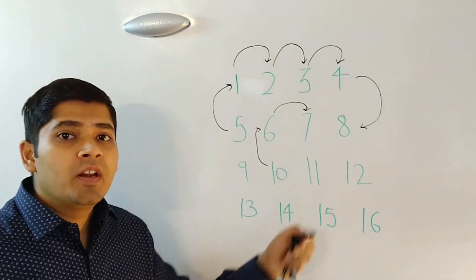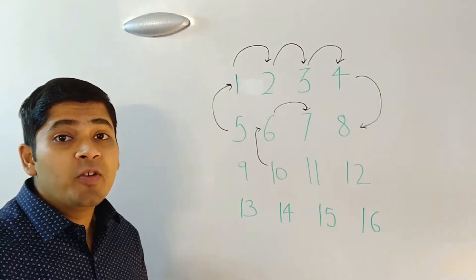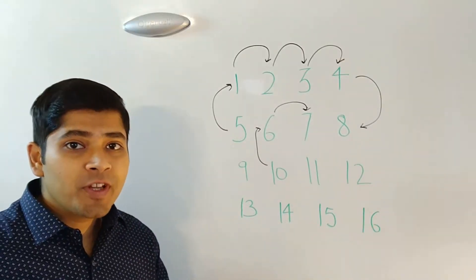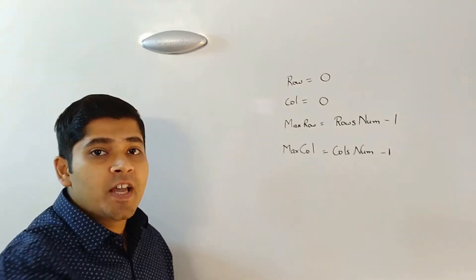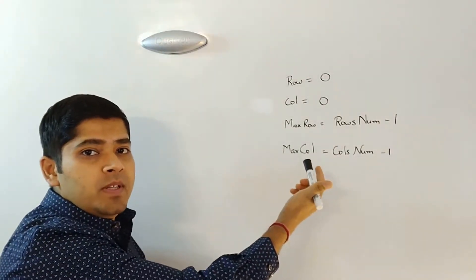So now we have an algorithm in place. How do we go about writing pseudocode for this? In order to write pseudocode for this, we will start off with four variables here.